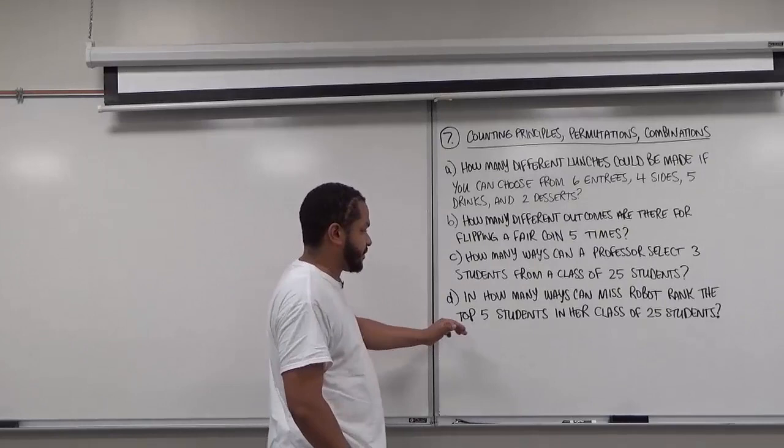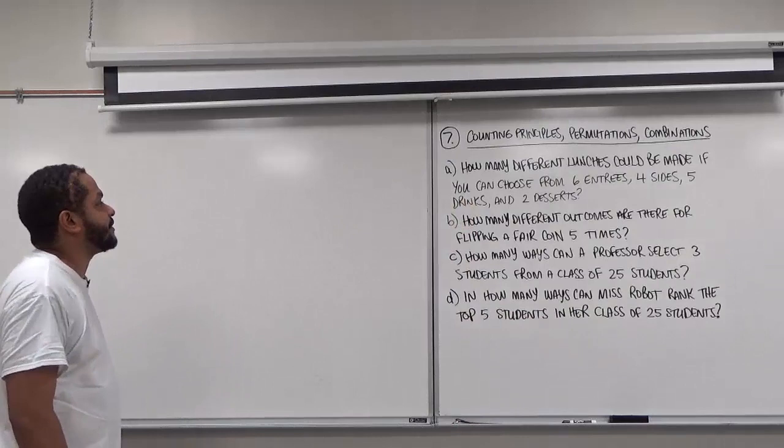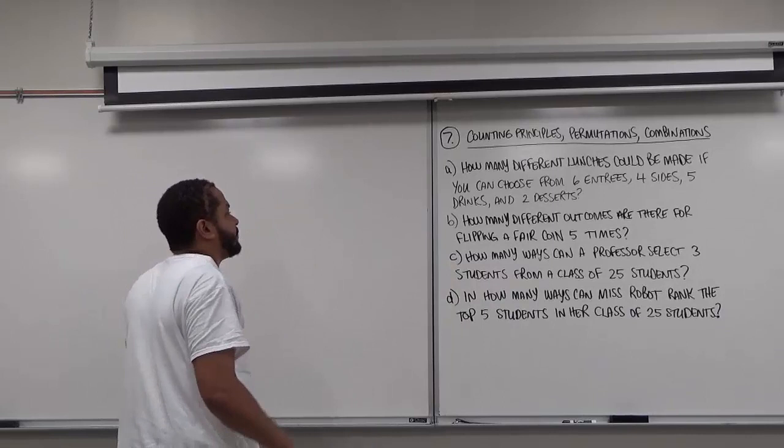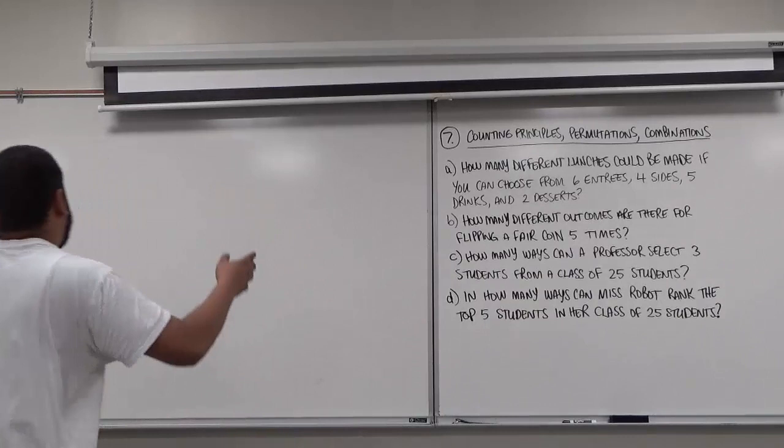Each of these runs on different methods. The first two are going to run on more or less counting principles, the third one is going to run on a combination, while the last one is going to run on a permutation. We're going to see why and investigate why we're using those principles. So let's begin with Part A.